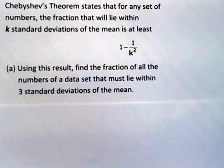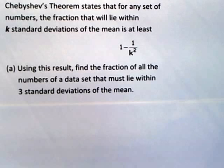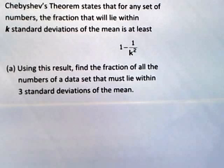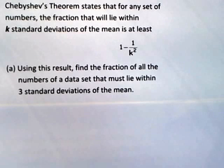Chebyshev's theorem states that for any set of numbers, the fraction that will lie within k standard deviations of the mean is at least 1 minus 1 over k squared. The first part of this question says: using this result, find the fraction of all the numbers of a data set that must lie within three standard deviations of the mean.